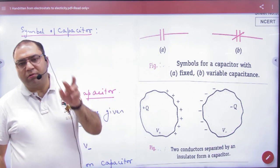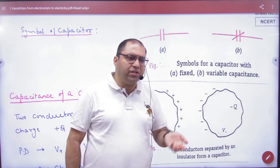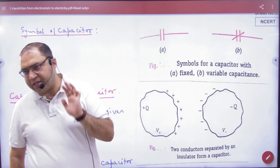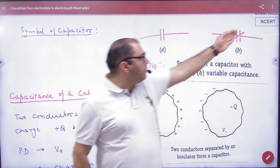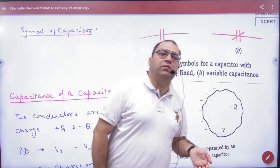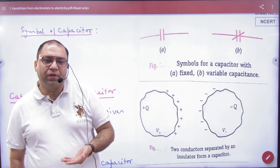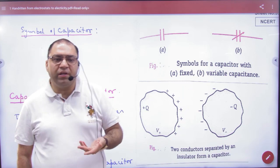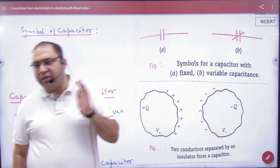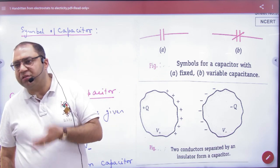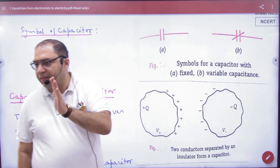Everything is included in this symbol, though it is not visible, the parallel plate capacitor can be understood. If you have an arrow on the capacitor symbol, this represents a variable capacitance capacitor. Normally our capacitor is fixed, but there is a variable capacitor whose capacitance can be changed — we will not study that now.